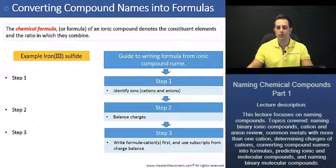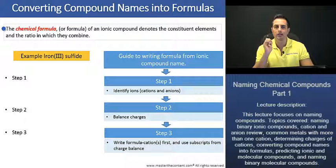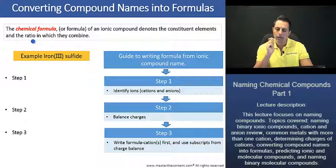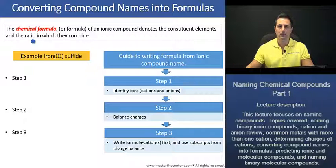Converting compound names into formulas. First, what does the chemical formula tell us? Let's just take a look at the definition quick and then we'll move forward. The chemical formula or formula of an ionic compound denotes the constituent elements and the ratio in which they combine. Converting compound names into formulas is fairly simple. We can just use this three-step process here to the right.